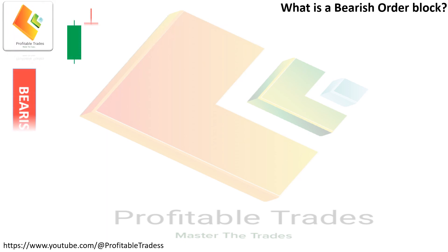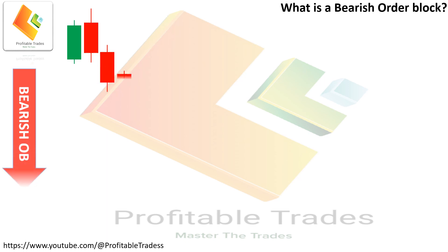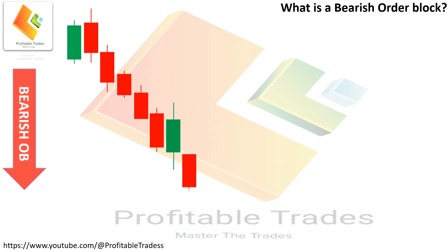What are bearish order blocks? Order blocks are similar to order flow in appearance and have the same function, but the only difference is that order blocks are made from a single candle. The straightforward definition: the last buying candle before a selling candle is called a bearish order block. There are two basic rules for a valid order block.